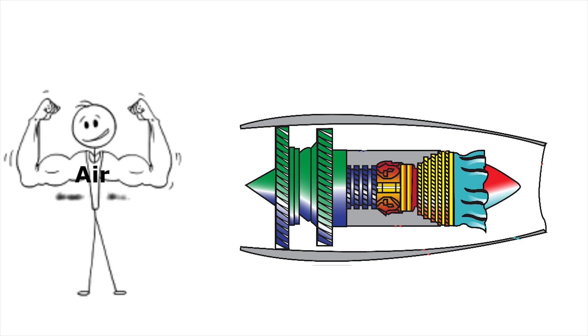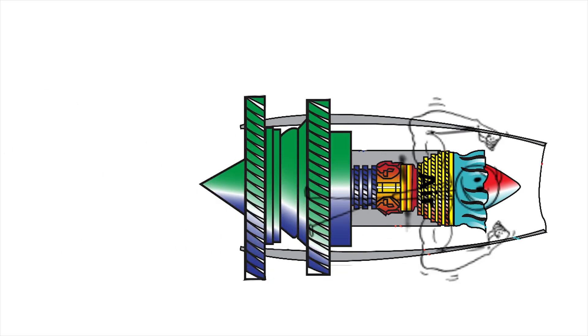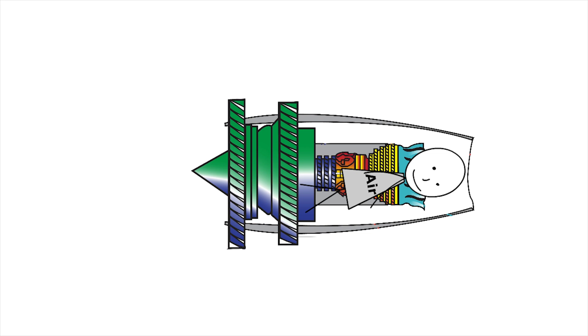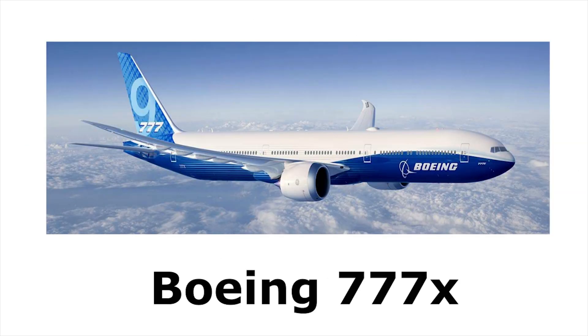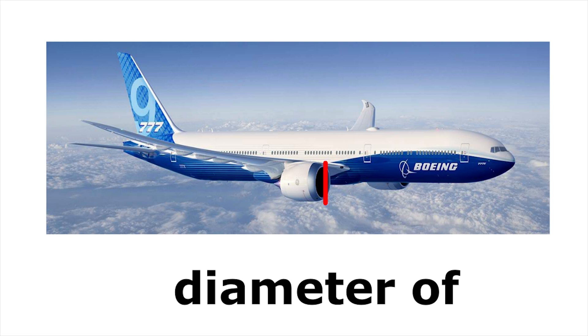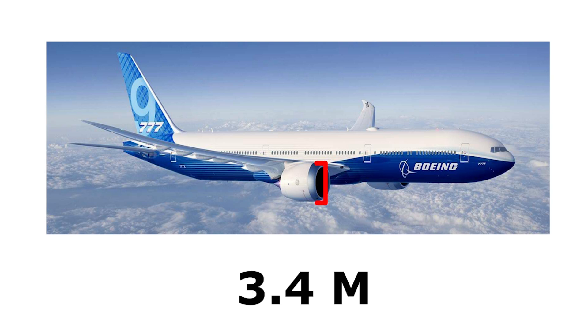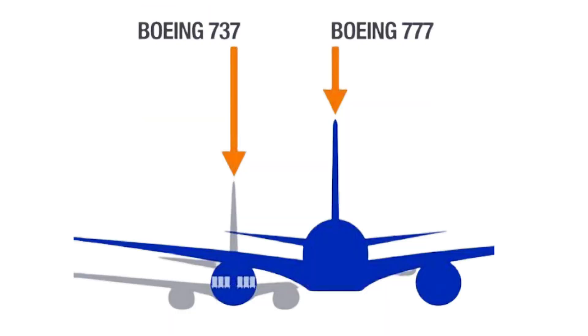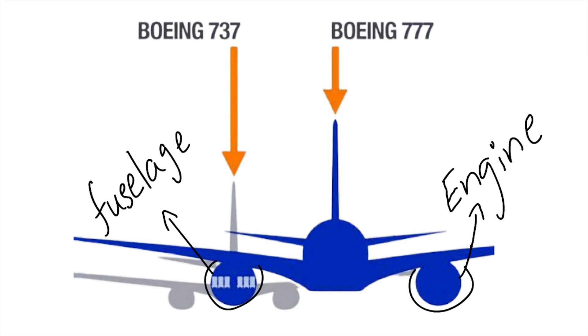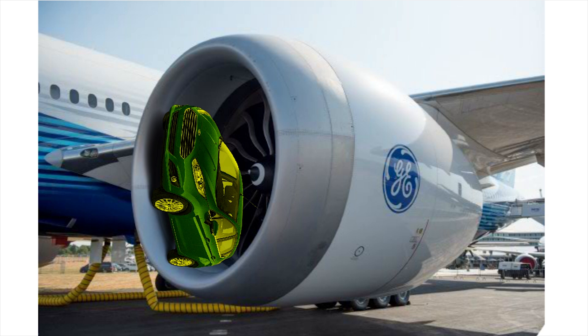But to increase the volume of air, you need to increase the size of the fan. So, the bigger the fan, the bigger the bypass, but also the bigger the engine. To give you an idea, the engine on a Boeing 777X has a fan diameter of 3.4 meters. To put it into perspective, the engine's overall diameter is about as wide as the fuselage of a Boeing 737. Basically, you can park a small car inside the engine widthwise. Insane, right? But it gets more insane.